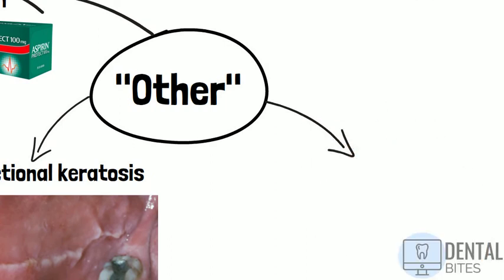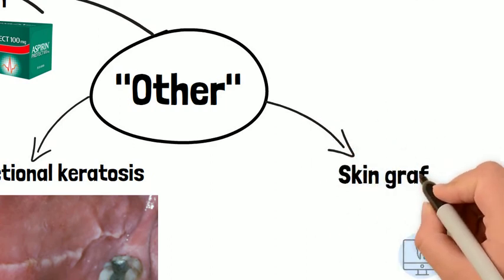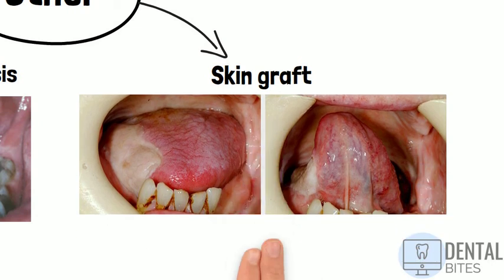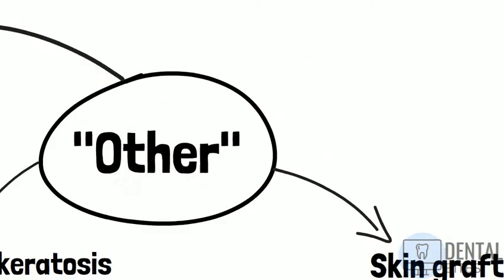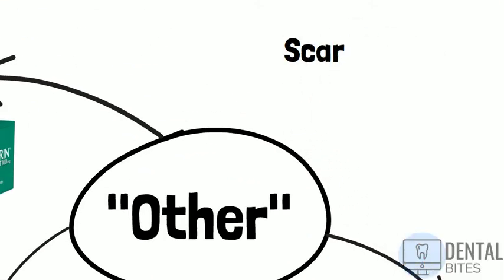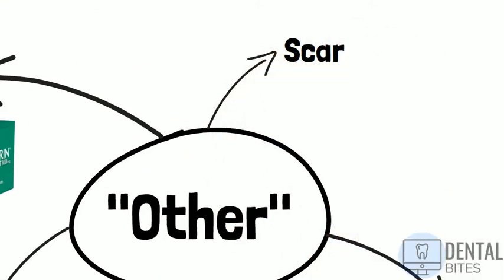In patients with missing teeth, keratosis may be seen on the alveolar ridge related to trauma when eating. A skin graft can appear as a white wrinkled area in the mouth and is typically used after excision of large areas of malignancy or dysplasia. Scars can also present as white patches in the mouth.